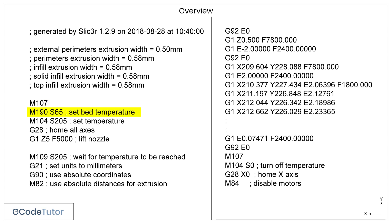Our next M-code is M190, which sets the temperature of our bed. Within each line of code, we use an S-value to define what the code does. So in this case, S65 sets our bed temperature to 65 degrees. S can mean a whole range of things depending on what M-code we use, and they will all be covered in depth in different parts of this course.